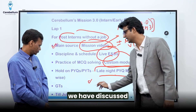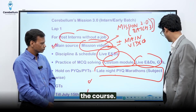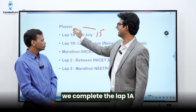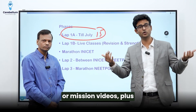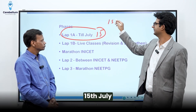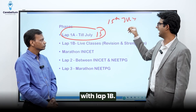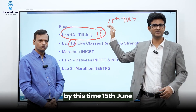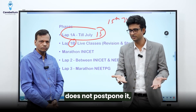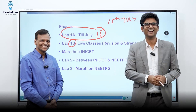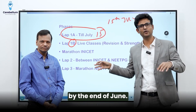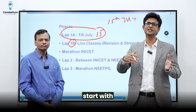GTs we have discussed. By July 15th, we will complete the course — Lap 1A — where you are using quick revision videos or mission videos plus question practice. After July 15th, we will start with Lap 1B. By this time, around June 15th, we have our INICET exam. If the government does not postpone it — and this time it is unlikely they would — we would have results by end of June and by July 15th, we would start with a new batch.